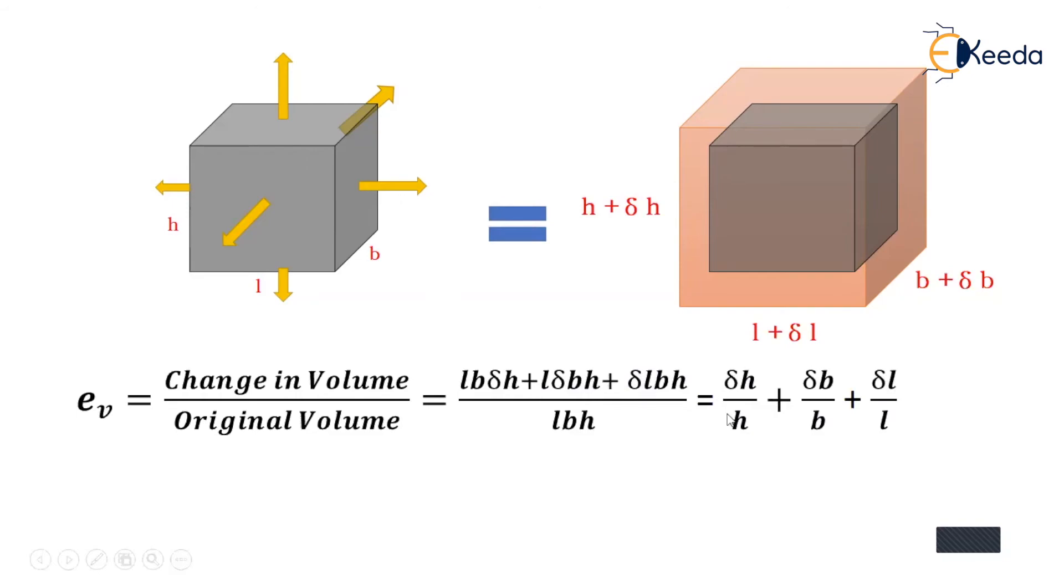This is nothing but volumetric strain equals the strain of height which is delta h upon h plus strain of breadth which is delta b upon b plus strain of length which is delta l upon l. Similarly, for different shapes and sizes of material and specimen we can define the volumetric strain.